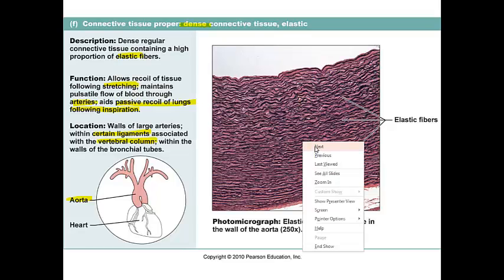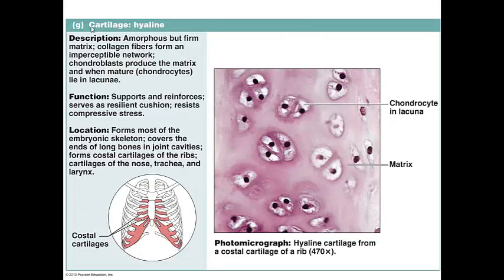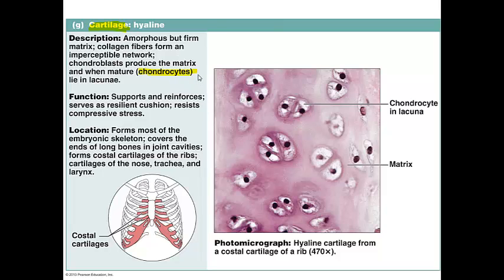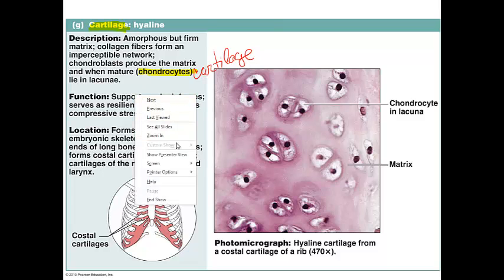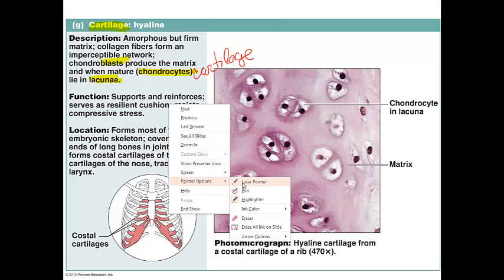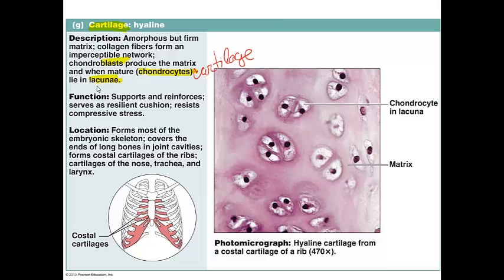That concludes the six different examples of connective tissue proper. The next three examples are all cartilage, and there are three different types. The first type is hyaline cartilage. In all three types of cartilage, we have mature cells called chondrocytes — 'chondrocyte' literally means cartilage cell. An immature cartilage cell is called a chondroblast — 'blast' means immature cell — and when mature, it becomes a chondrocyte located in a space called a lacuna, which means 'space.'